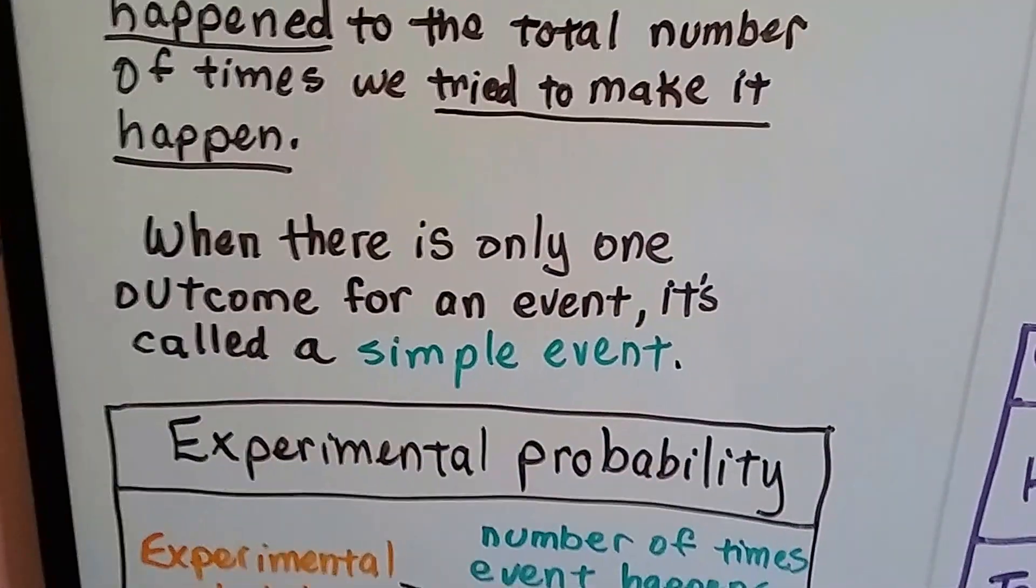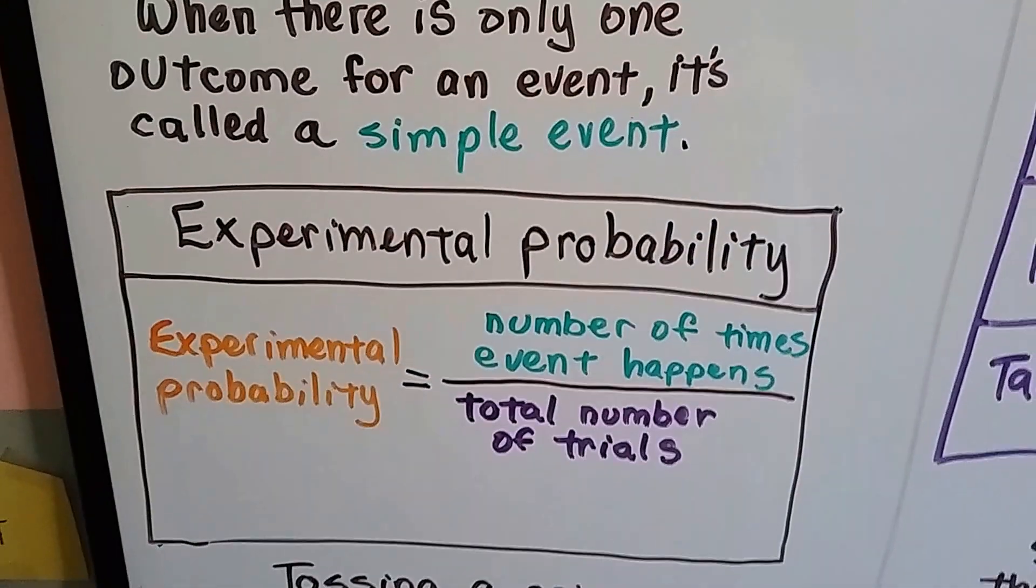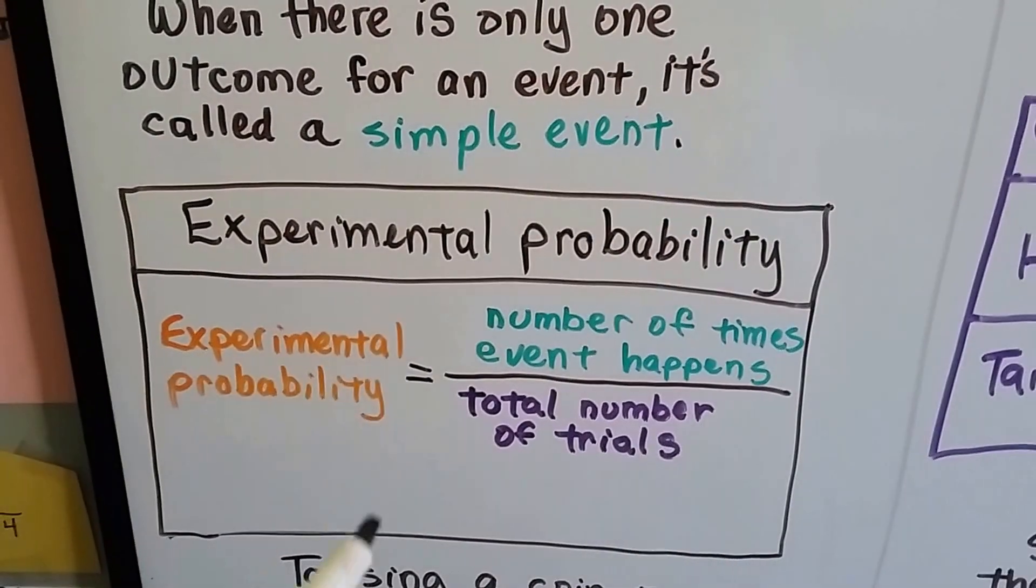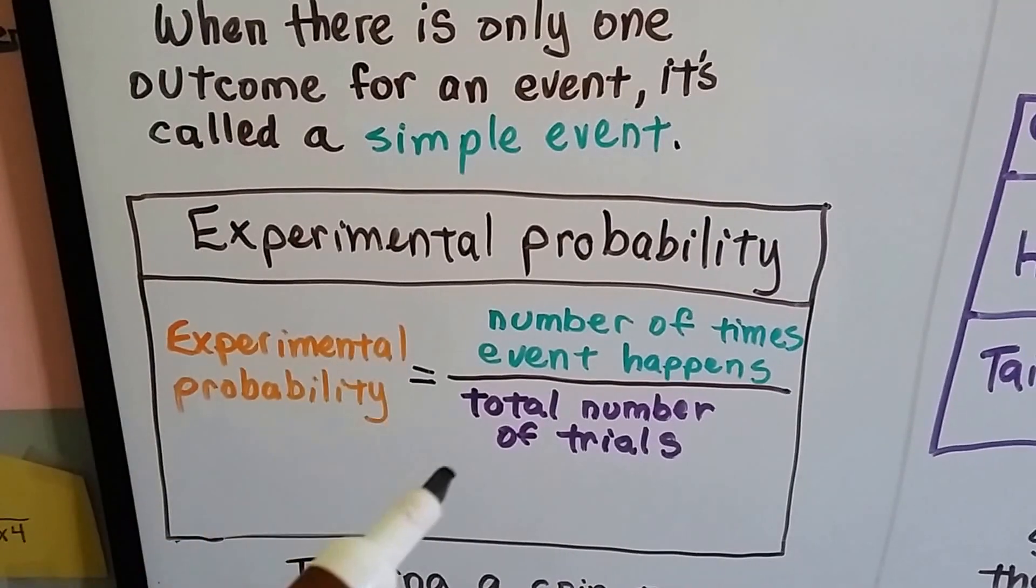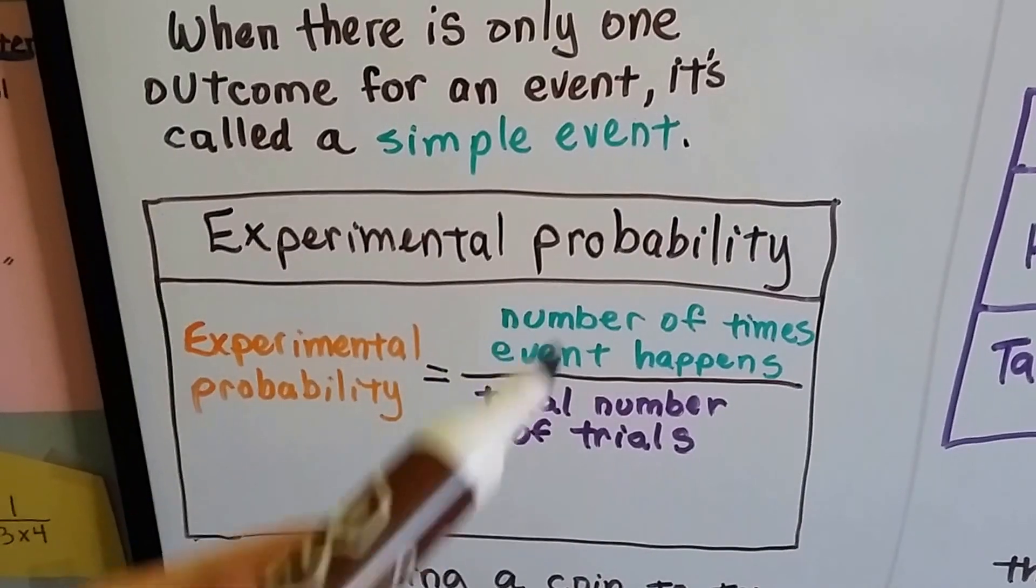When there's only one outcome for an event, it's called a simple event. Experimental probability is the number of times the event happens over the total number of trials, as a fraction.